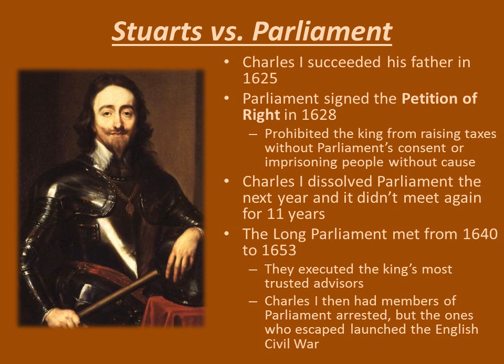Charles I, not pleased with that, struck back. He had some members of Parliament arrested — he sent people in and had the leaders arrested. Those who escaped roused up a rebellion against the monarchy among the common people, and that is how the English Civil War began.